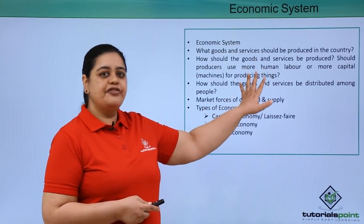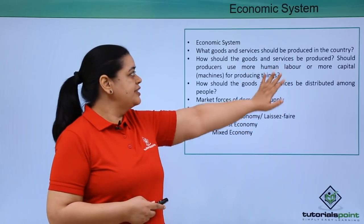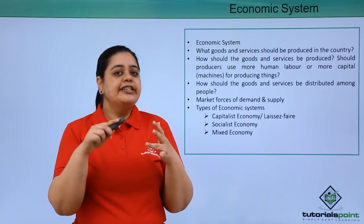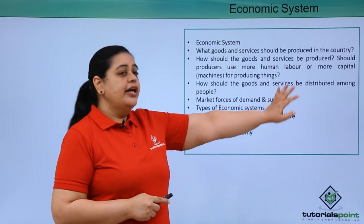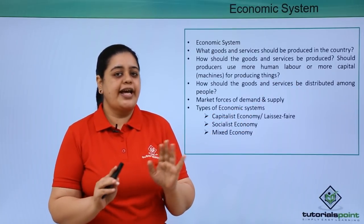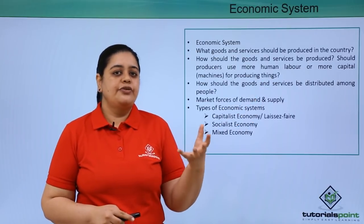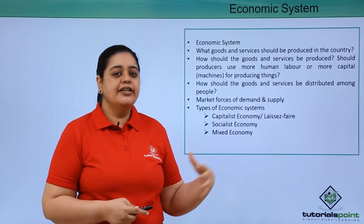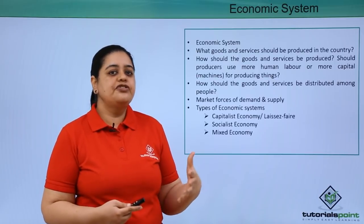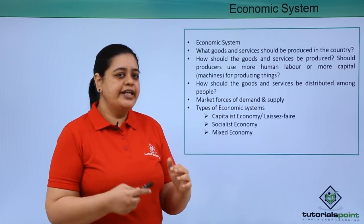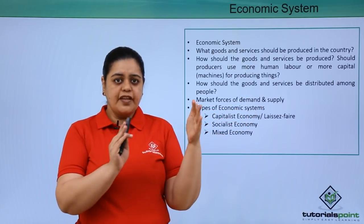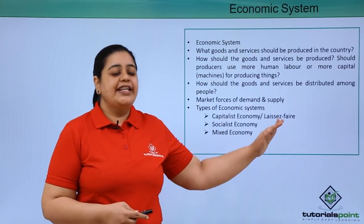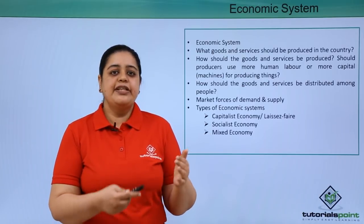To answer the three questions for a mixed economy: what goods and services would be produced? Those which are in demand, but also the essential goods required compulsorily — the needs of the people — would also be produced. How would goods be produced? It would be a mix of labour and capital intensive. Private players will focus on methods that give maximum profit, using cheap labour or machinery as suitable, while the government will encourage and open industries that are labour intensive. How should goods and services be distributed? Goods that meet people's needs for their wellbeing would be distributed equally among all people, while remaining goods would be purchased by people as and when they need them.